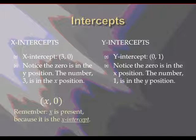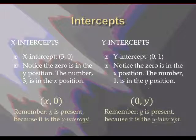For the y-intercept, the example we had was 0, 1. 0 is in the x-position here. The number 1 is in the y-position. Same concept. This time x is 0 and you have a y-value. Y is present in the y-intercept because it's just that. It's the y-intercept. We want the y-value.